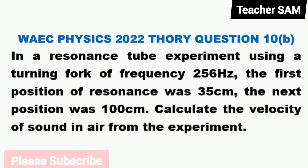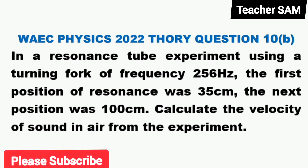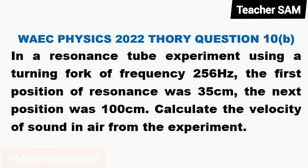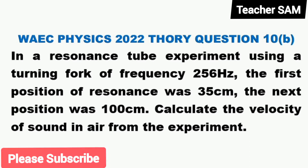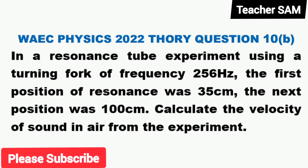Question 10b. In a resonance tube experiment using a tuning fork of frequency 256 Hz, the first position of resonance was 35 cm and the next position was 100 cm. Calculate the velocity of sound in air from the experiment.